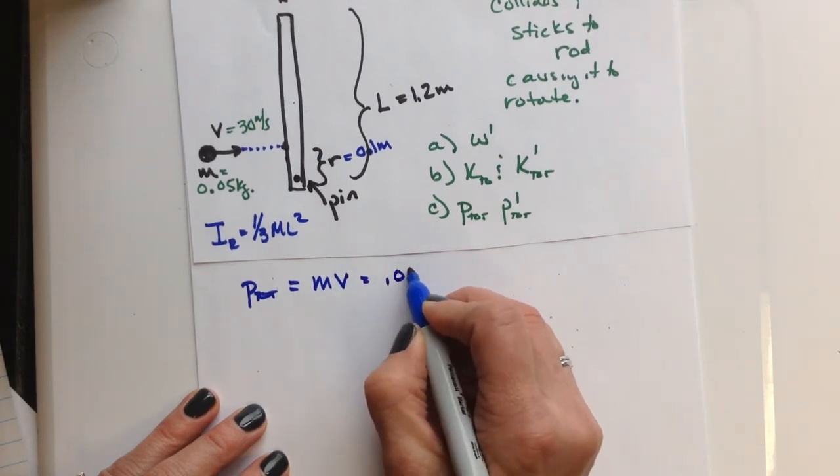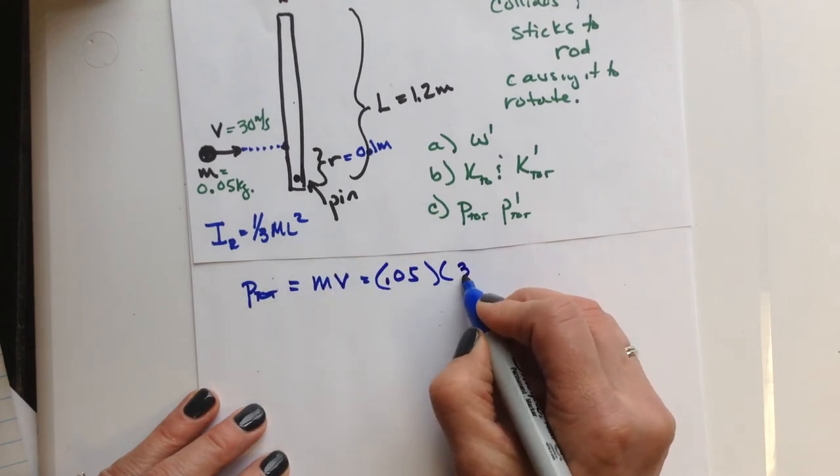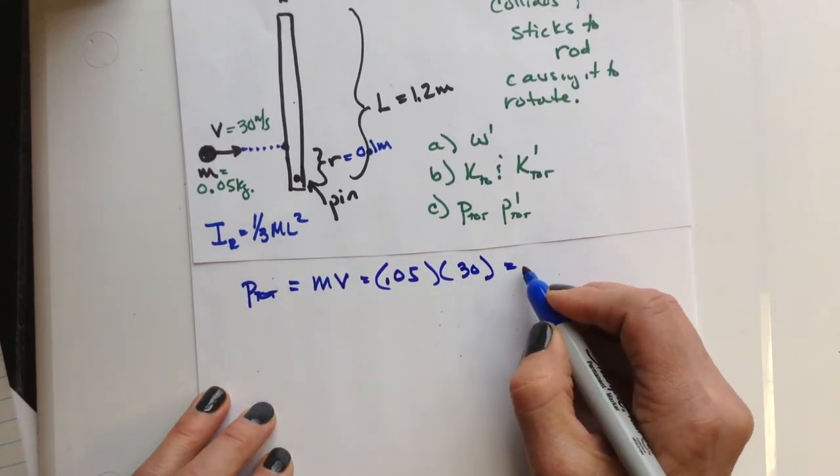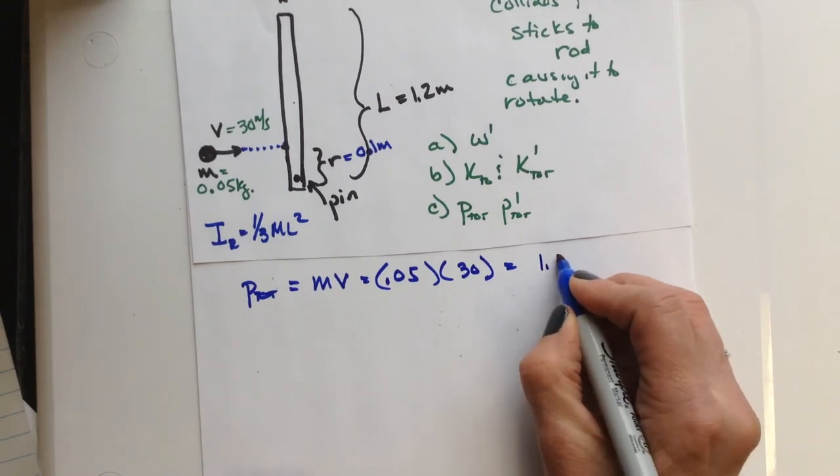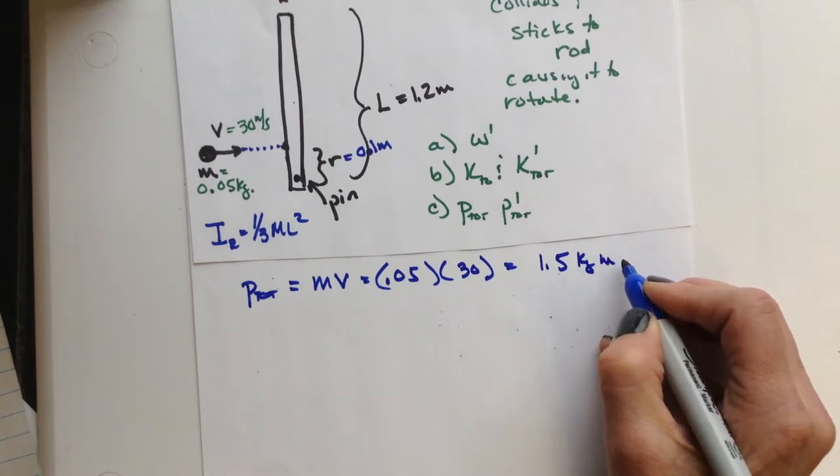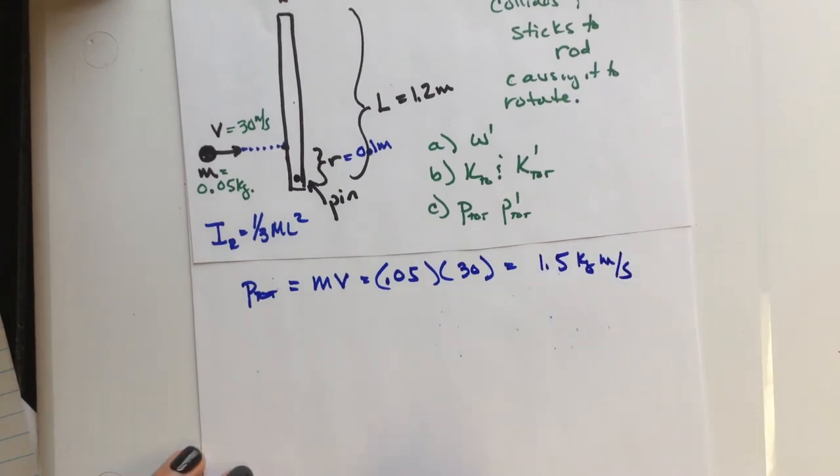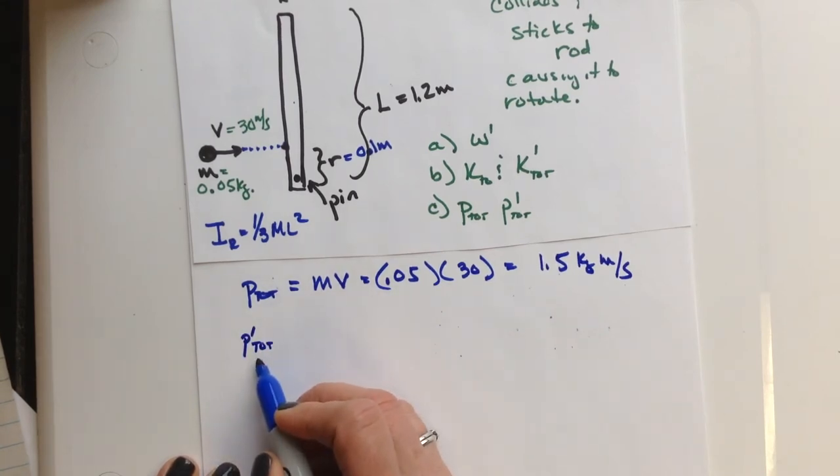so that's 0.05 times the velocity, which is 30, and you're going to get the 1.5 kg m per second.